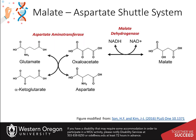Recall that the malate-aspartate shuttle system is dependent on the functioning of two enzymatic processes. The first is aspartate aminotransferase, which can utilize glutamate as an amine donor to generate aspartate from oxaloacetate; alpha-ketoglutarate is the other product formed in the process. Depending on the substrate concentrations and other regulatory mechanisms, this enzyme can also work in the reverse reaction to produce glutamate and oxaloacetate.